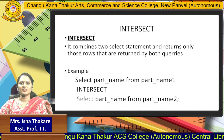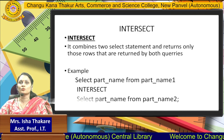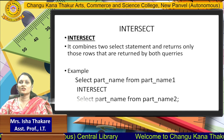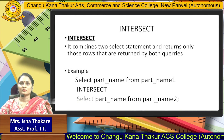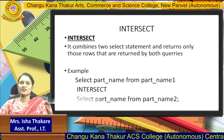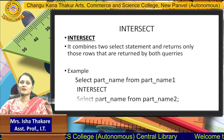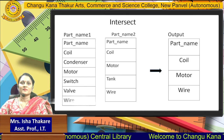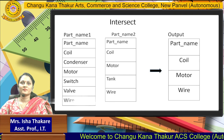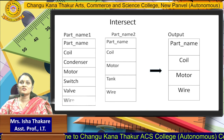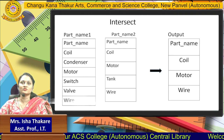Next is the Intersect operator — the third set operator. It combines two SELECT statements and returns only those rows that are returned by both queries; only the common fields from both tables are fetched. Using the same database: SELECT part_name FROM part_name_1, INTERSECT, SELECT part_name FROM part_name_2. The common values from both tables are Coil, Motor, and Wire, so those values will be fetched.